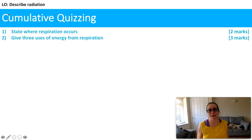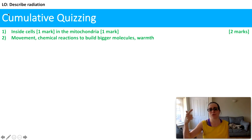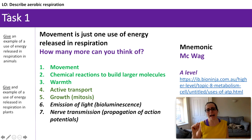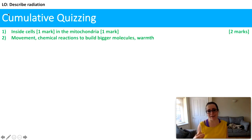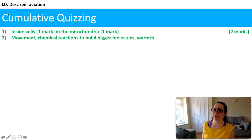Three uses of energy from respiration — one mark each: movement, chemical reactions to build bigger molecules, and warmth. We could also have active transport or growth. If you're being really fancy and talking about bioluminescence, it's a bit of a risky mark at GCSE — it's better to just play it safe.